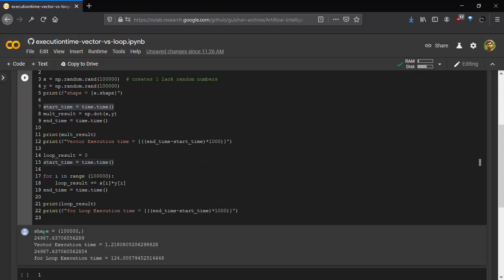As you can see here that the shape is 100,000 comma. Because we had discussed previously that vectors are represented as column vectors. And here the first one is row and the second is the column which is blank. Since we are doing the operation on same values, we should get the similar result. So here also we get 24987 for both vector as well as for the loop.